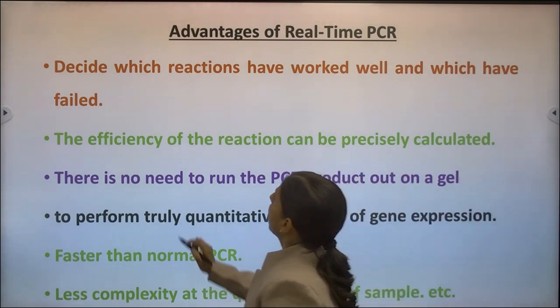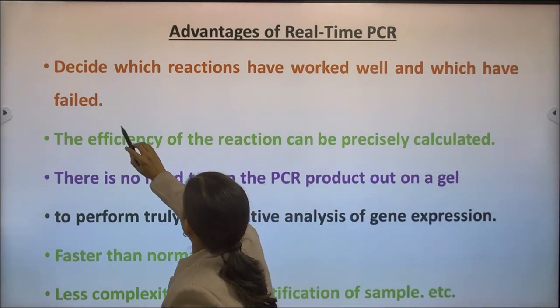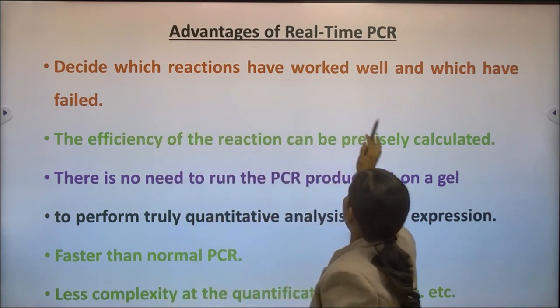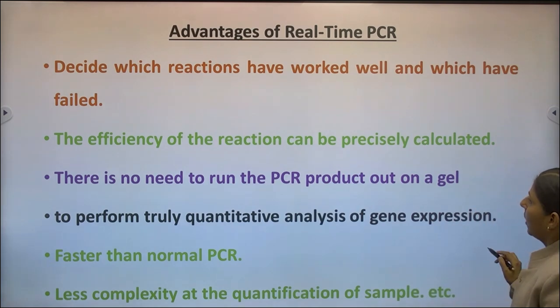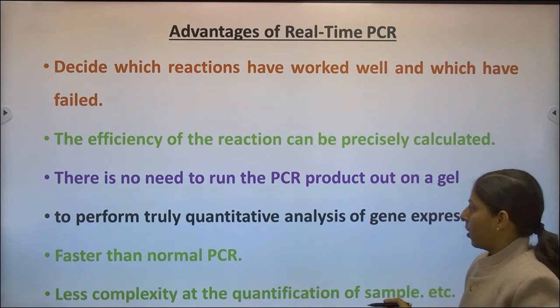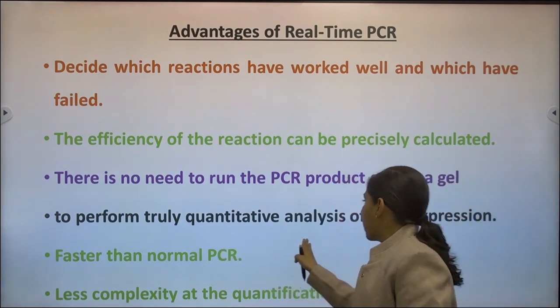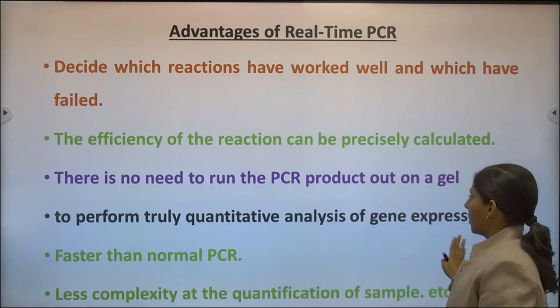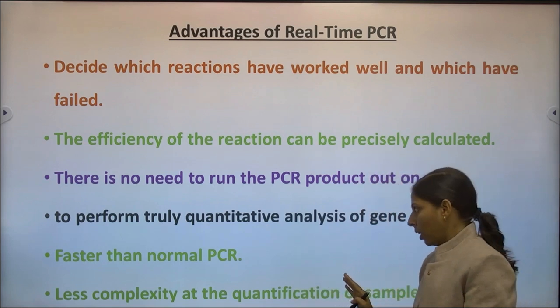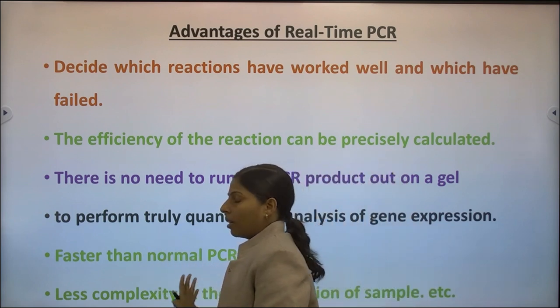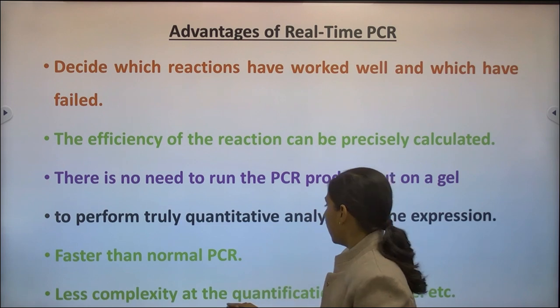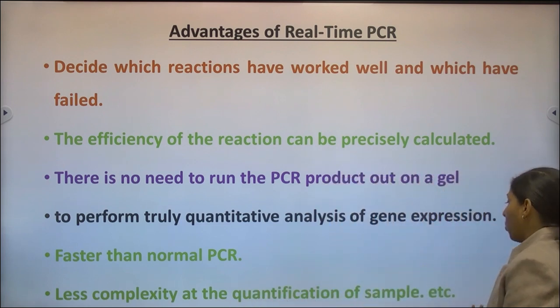In conclusion, real-time PCR helps to decide which reactions have worked well and which have failed. The efficiency of the reaction can be precisely calculated and there is no need to run the PCR product on a gel. It performs both qualitative and quantitative analysis of gene expression, gives accurate measurements, is faster and more rapid than normal PCR, and is less complex for sample quantification.